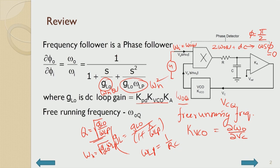The static characteristic says output phase follows input phase, output frequency equals input frequency. When S equals J omega is substituted, omega corresponds to the rate of change of frequency. The frequency of the change in frequency is the same as the frequency of the change in phase. So once the phase locking phenomenon is understood as a linear system, S equal to J omega corresponds to the frequency of the change in frequency.